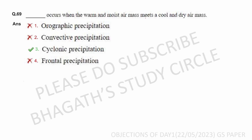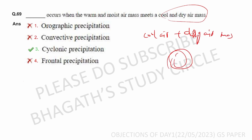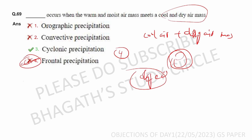Next question: precipitation occurs when a warm and moist air mass meets a cool and dry air mass — this describes frontal precipitation. Option four — cyclonic/frontal precipitation — is the correct answer. Object raised confirmed.